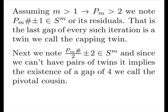Next, we note by construction half of the primordial plus or minus 2 are both in RS^m, and since we can't have pairs of twins, it implies the existence of a gap of 4, we call the pivotal cousin.